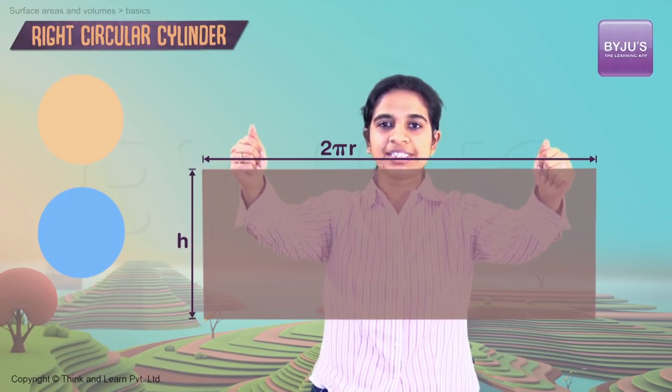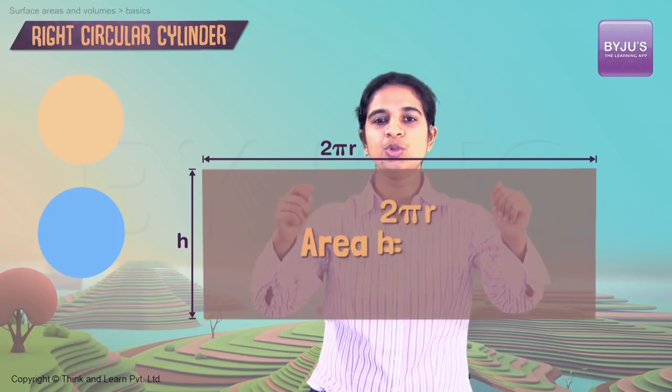And this other side is nothing but h, right? So what we are left with is a rectangle with length as 2πr and breadth as h. The area of this rectangle will be 2πrh. That is nothing but your curved surface area, right? So we have two flat surfaces and one curved surface.